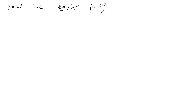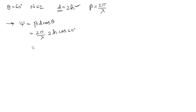Now we calculate ψ. Since the phase difference α = 0 (we absorb the sign into the image), ψ = βd·cosθ = (2π/λ)(2h)(cos 60°) = (2π/λ)(2h)(1/2) = 2πh/λ.